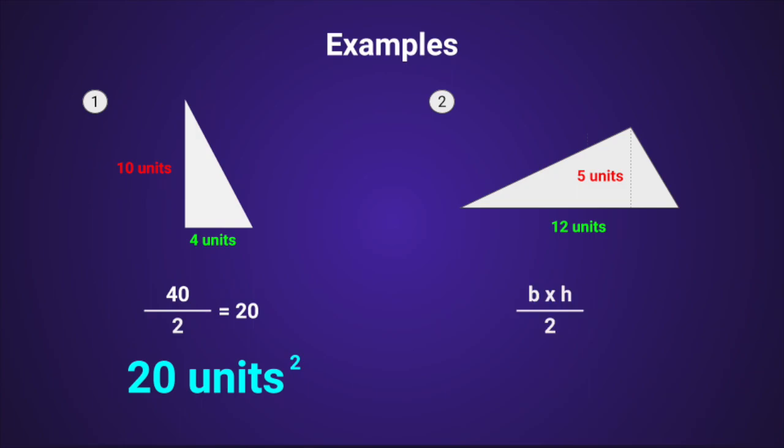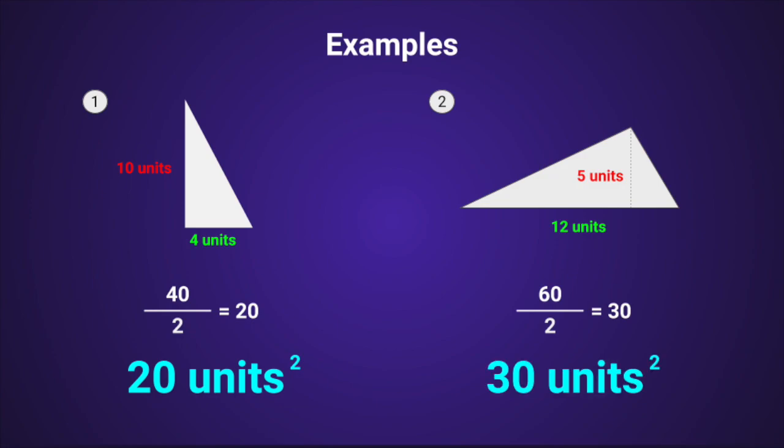In the second one, the base is 12 and the height is 5. 12 times 5 is 60, divided by 2 is 30. So the area is 30 units squared. It's that easy!